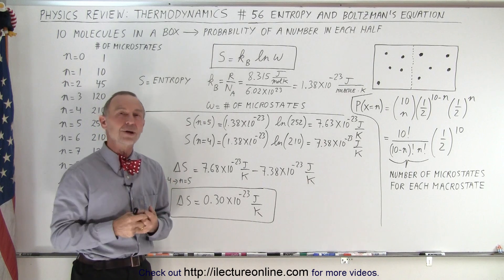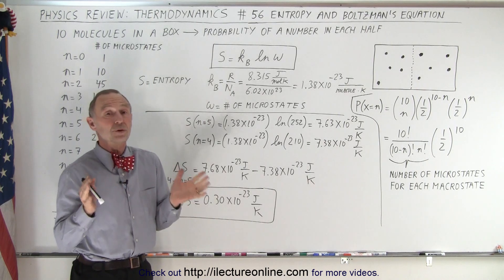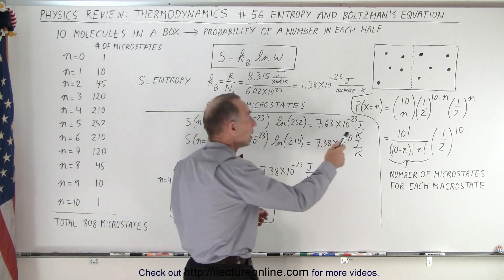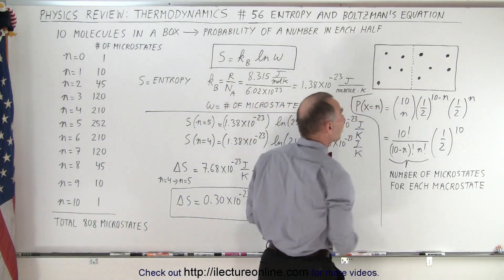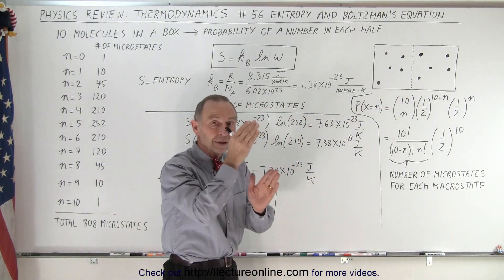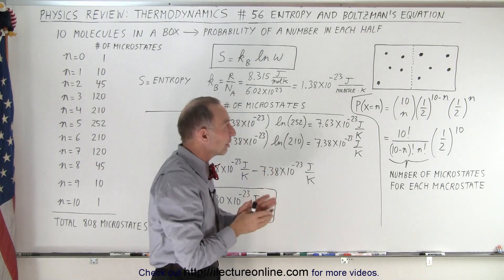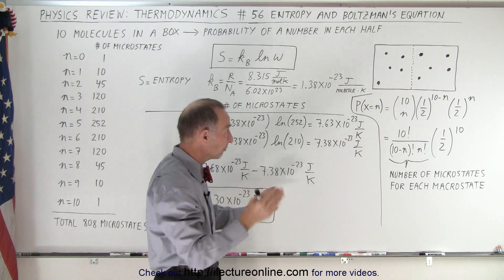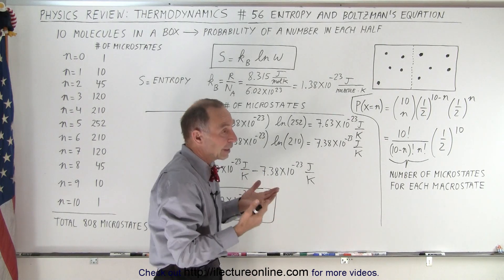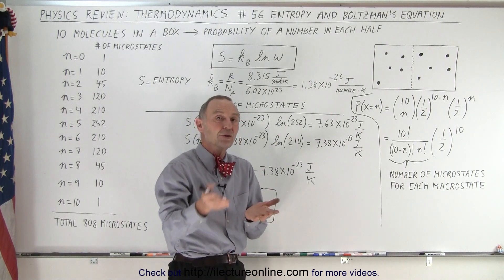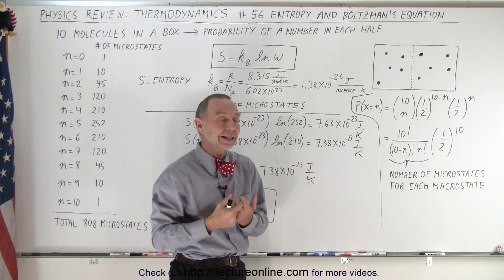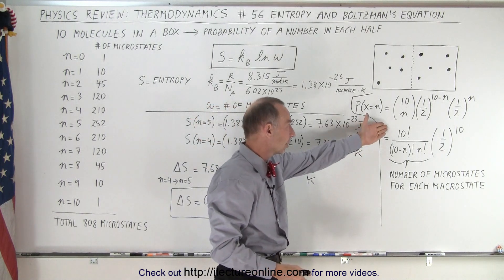But can we make sense out of the equation? And so what we're going to do here is relate back to the previous problem where we had a box containing 10 molecules. We have an imaginary line halfway so that the box is divided into two halves, but the molecules are free to move back and forth. And so what's the probability of finding any number of molecules on one side and the remaining on the other side?